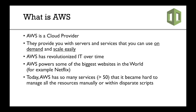But today, AWS has so many services — over 50 of them — that it became incredibly hard for developers, DevOps, Solutions Architects, and everyone to manage all the resources created in AWS manually, or within scripts that are in different languages in different places. I mean, it's crazy, right?